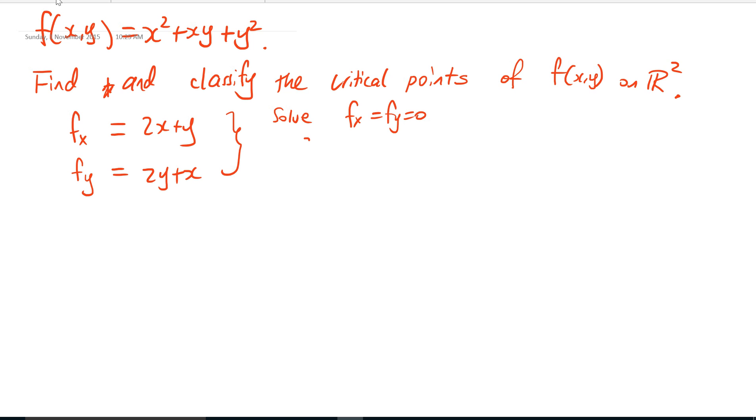We need to solve fₓ = fᵧ = 0, which implies 2x + y = 0 and 2y + x = 0. This system is non-degenerate, so we have an inverse matrix, and we get (x,y) = (0,0) as the only solution.